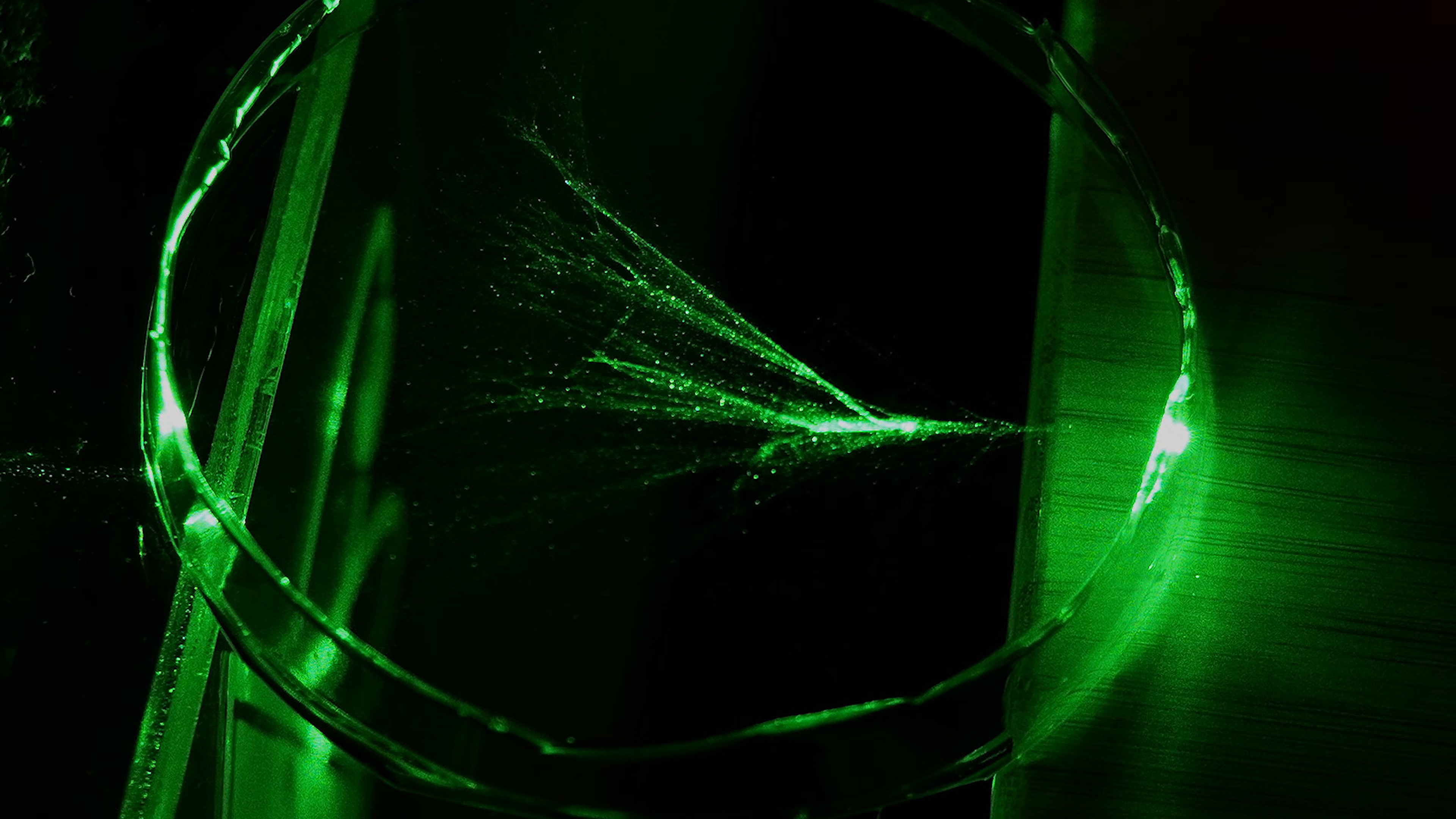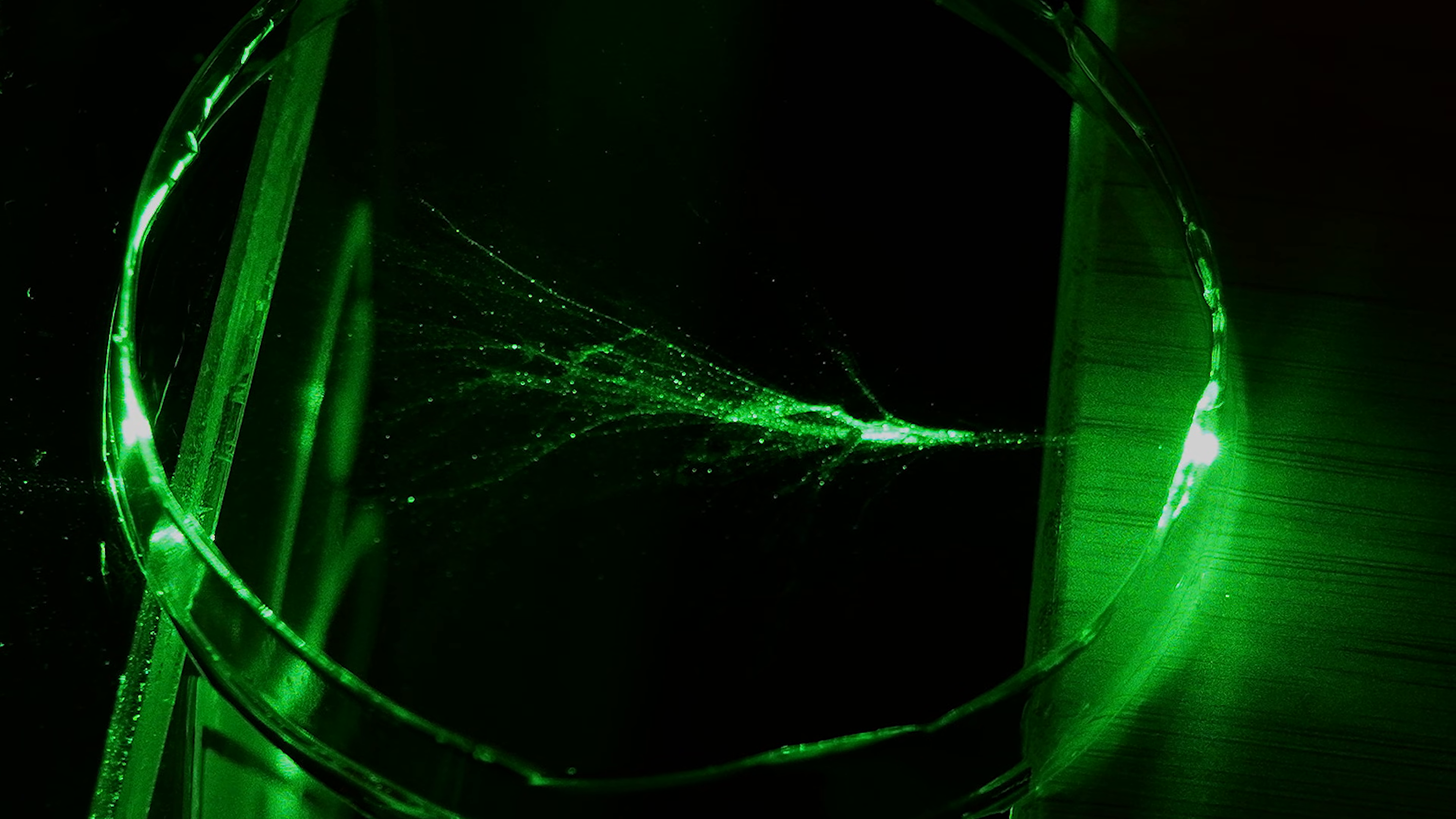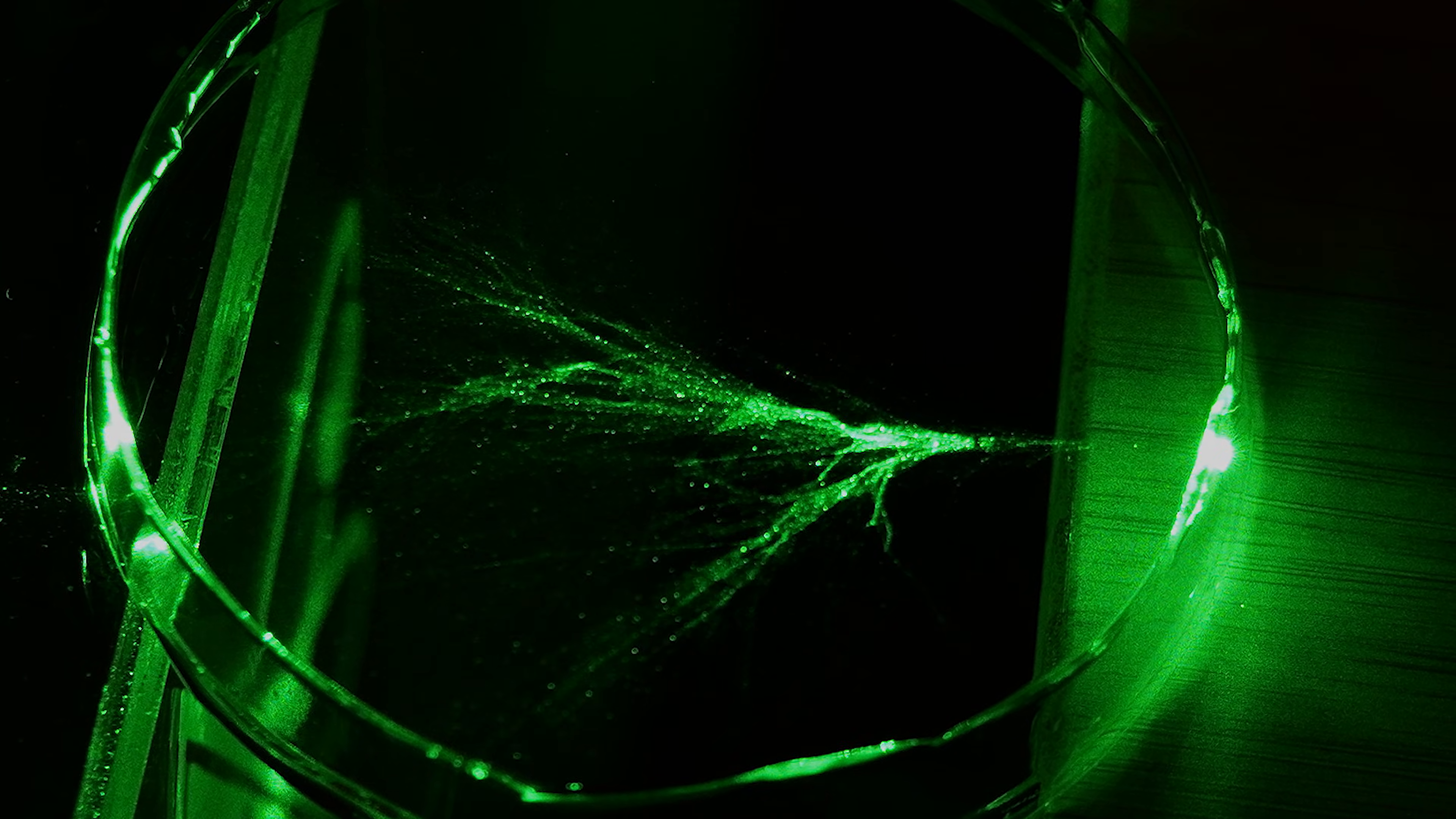You're looking at light doing something it's not supposed to do. Instead of spreading out smoothly, it's collapsing into bright branching paths.